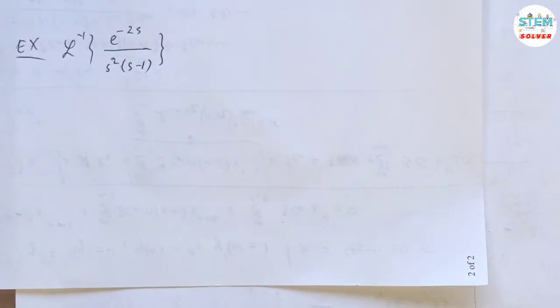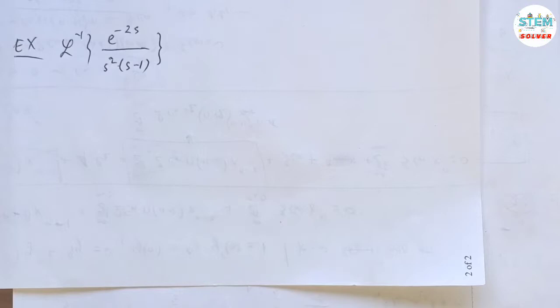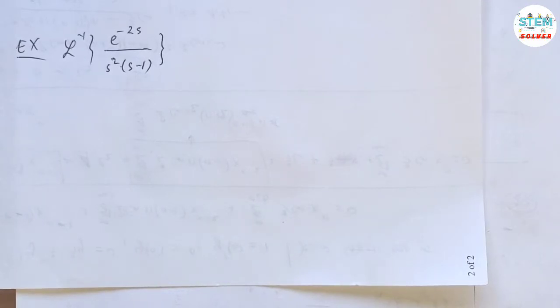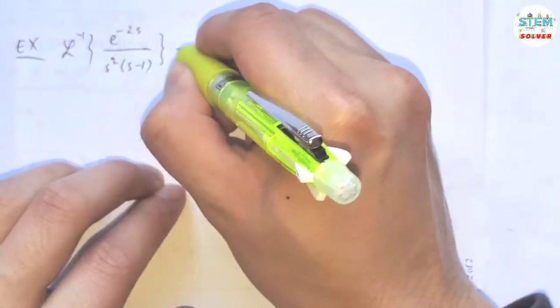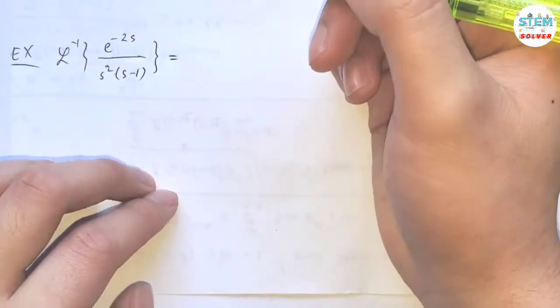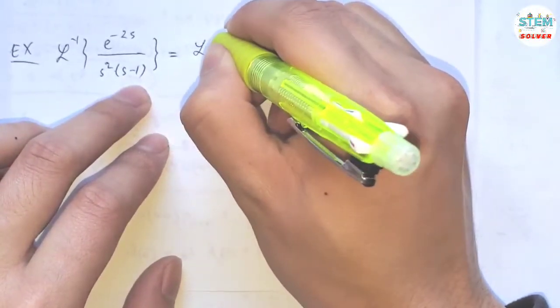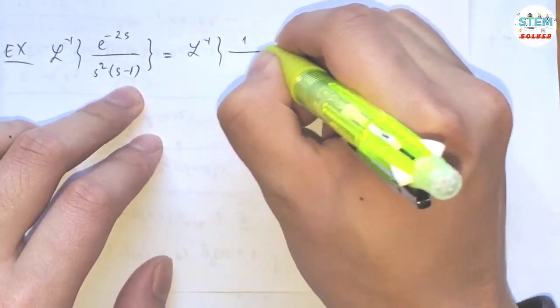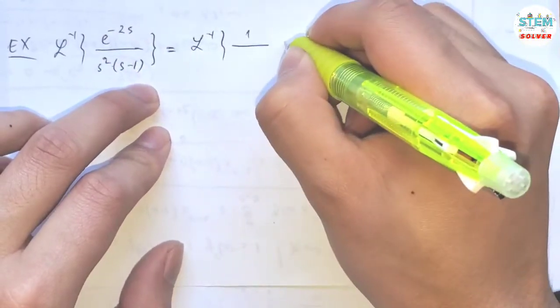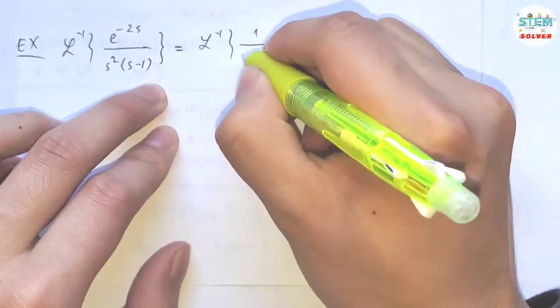Find the inverse Laplace transform of e to the negative 2s over s squared times s minus 1. So first looking at this, we see that there's a lot of things here. So I'm going to rewrite it in some way. Let's bring the e to the negative 2s down here and rewrite the rest.